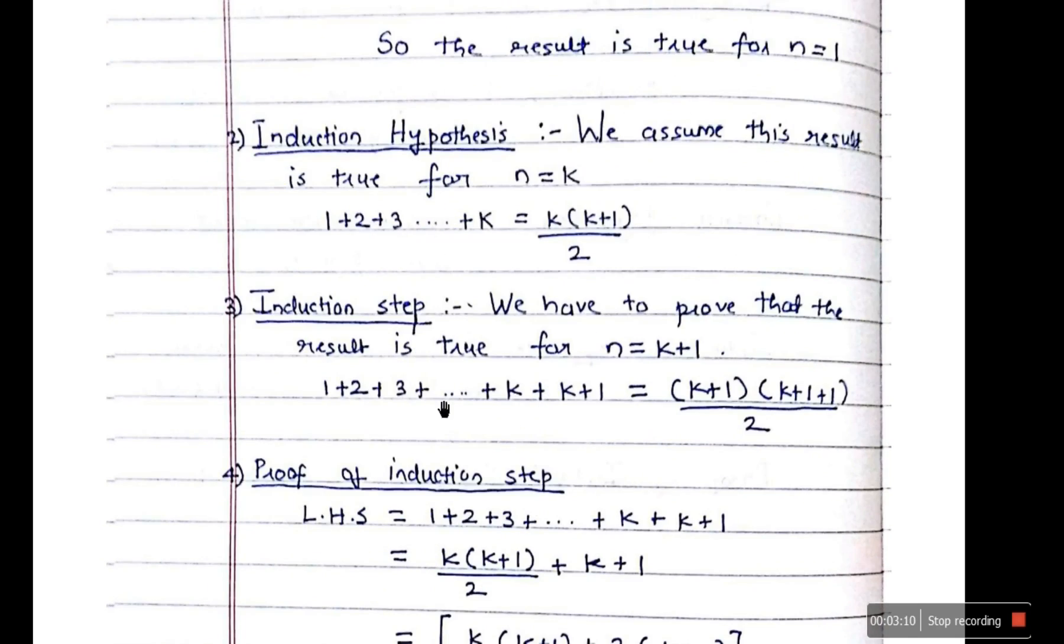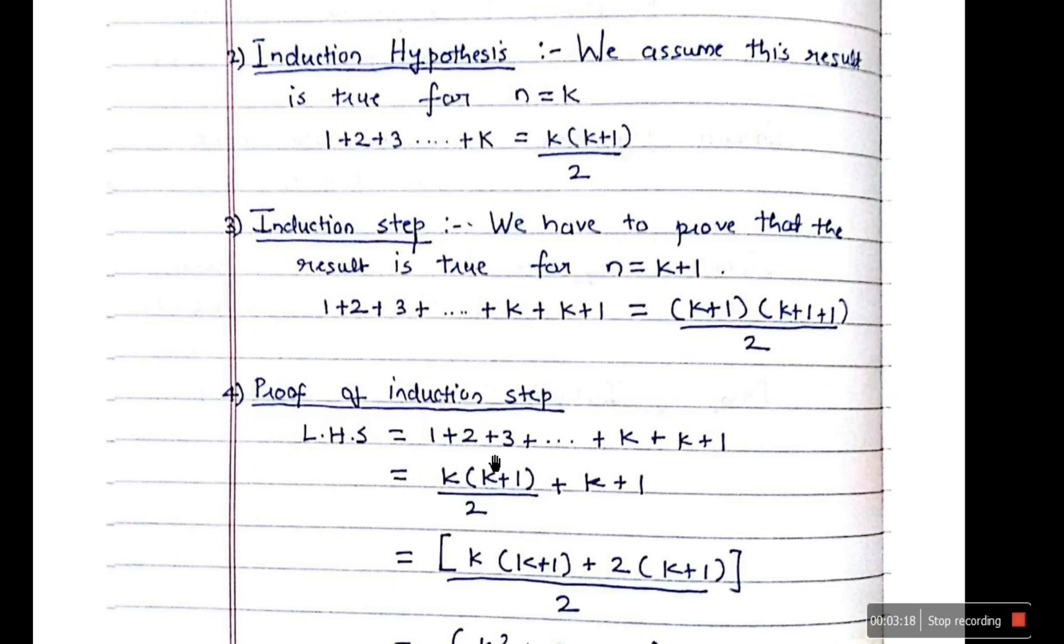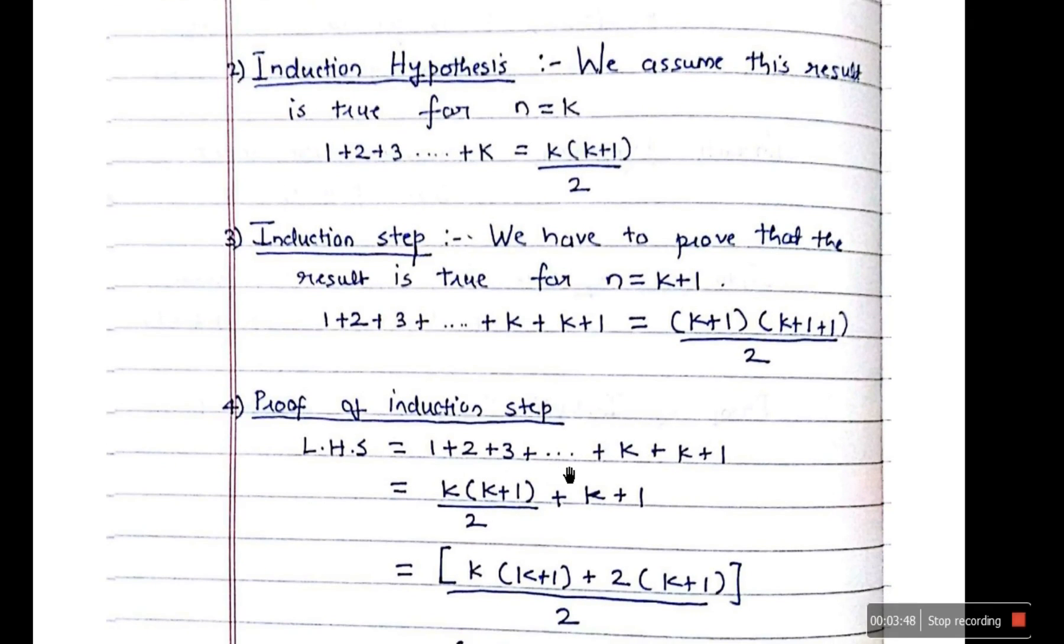Now final step is we have to prove that what statement we have made over here, that is induction step. We have to prove that it is true. Now LHS is equal to 1 plus 2 plus 3 plus dot dot dot plus k plus k plus 1, which is this. So this is the LHS. Now we already know what is the value of the LHS. Why? Because over here in the second step as you can see, we have 1 plus, not the whole LHS but the part of it. So we know what is 1 plus 2 plus 3 dot dot dot till k. What is the value of that? k into k plus 1 upon 2. So till here, 1 plus 2 plus 3 plus till k, we know the value.